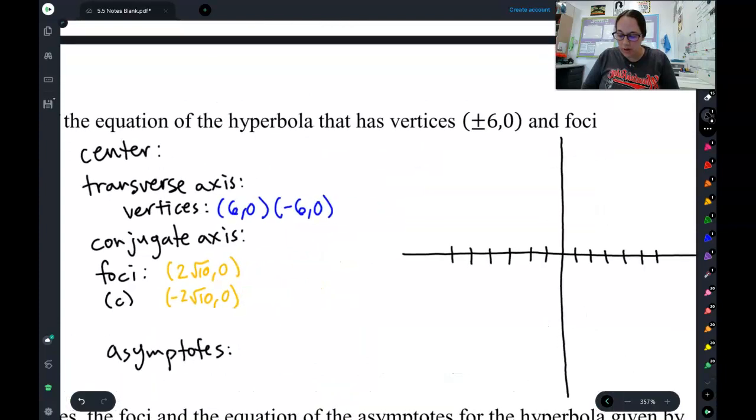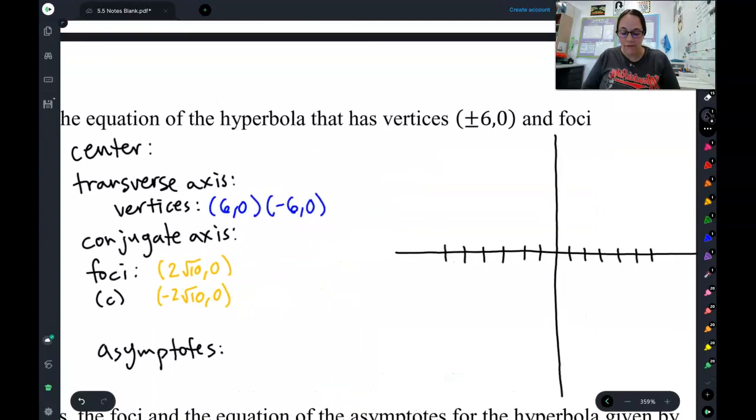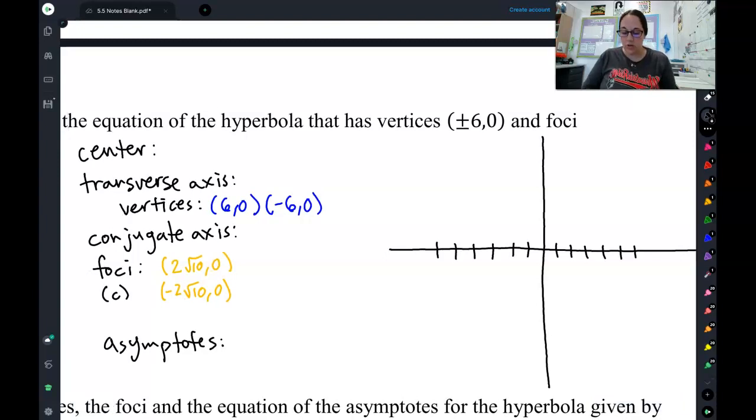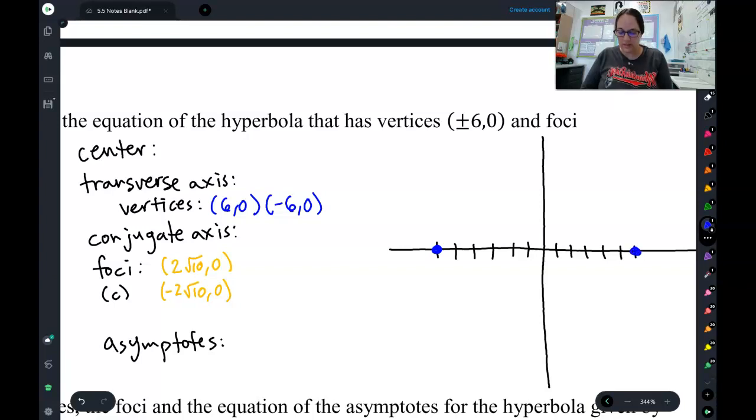To do that, we're going to start with the information it gives us and graph this whole hyperbola. So I have my vertices at negative 6, 0 and positive 6, 0.